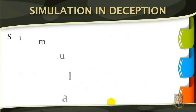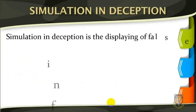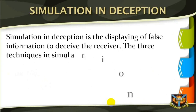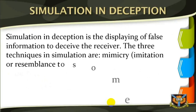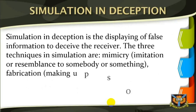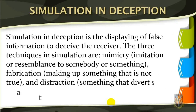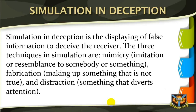Simulation in deception is a displaying of false information to deceive the receiver. The three techniques in simulation are mimicry — that is, imitation or resemblance to somebody or something — fabrication, that is making up something that is not true, and distraction, something that diverts attention.